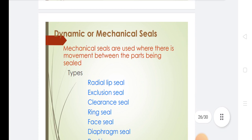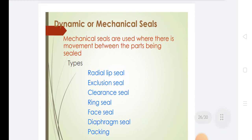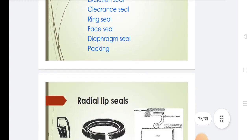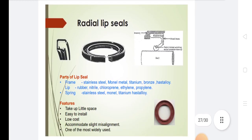Dynamic or mechanical seals are used where there is movement between the parts being sealed. Types include radial lip seal, exclusion seal, clearance seal, ring seal, face seal, diaphragm seal, and packing. This is a radial type seal.